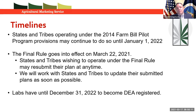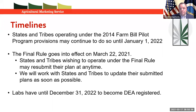Regarding timelines: states are able to continue to administer their 2014 Farm Bill pilot programs out until January 1, 2022. The final rule formally goes into effect on March 22nd of this year. States and tribes that are eager to amend their existing hemp production program plans or establish new plans are encouraged to submit those documents to USDA as quickly as possible. The individuals introduced at the very beginning are standing by ready to work with you on understanding the final rule provisions, working through the review process, and getting updated plans approved and posted to the website.